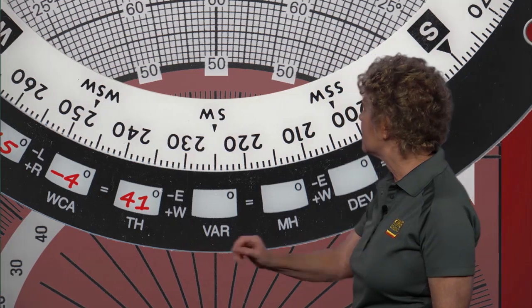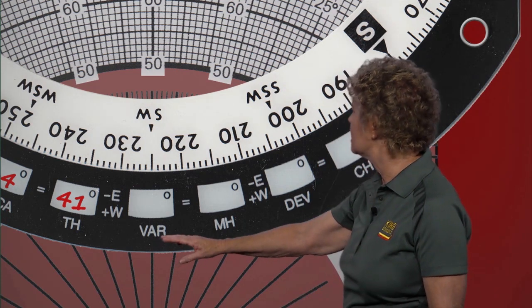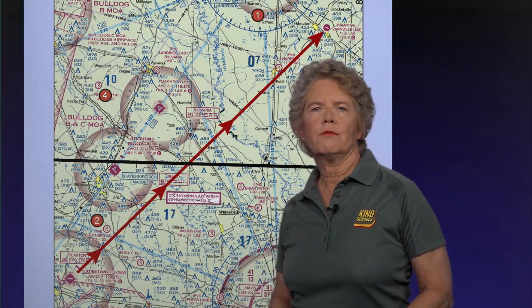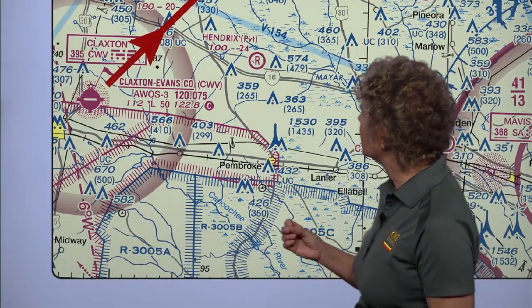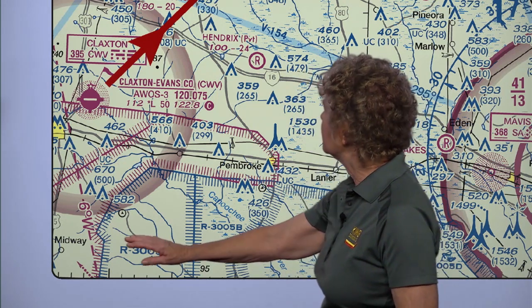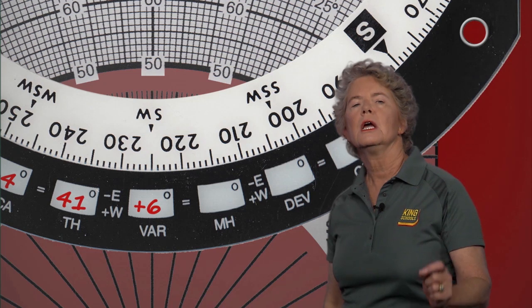To go from our true heading to our magnetic heading, we need to know what the variation is, and we get that off the chart. We're looking for a dashed magenta line. The only one we can find runs diagonally in the lower left corner of the chart, just to the left of our departure airport, and it says our variation is 6 degrees west. Do we add or subtract it? We're going to add it — because east is least, west is best. The box at the bottom of the flight computer also says to add westerly variation, so put plus 6 in the variation box.